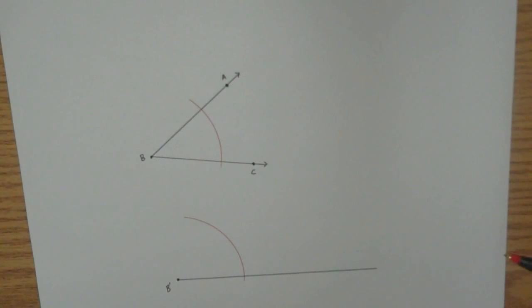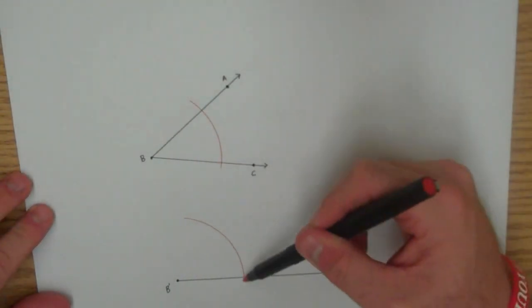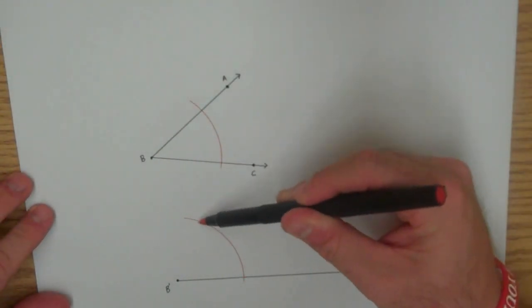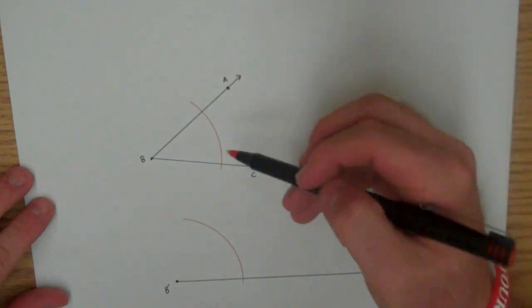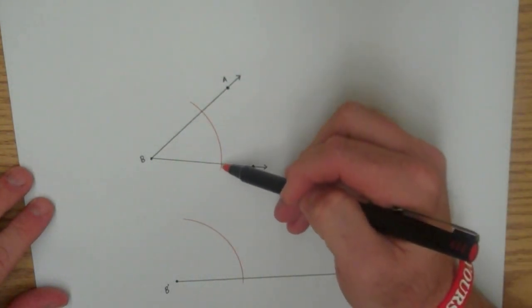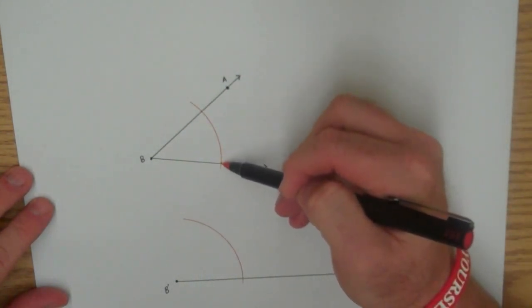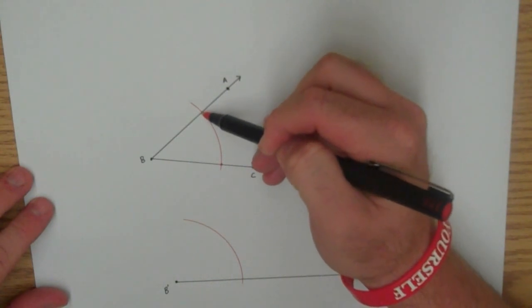Now what I want to do is I need to know how far along this arc do I need to put a point of intersection to draw the other side of my ray. Well, what I'm going to do is I'm actually going to measure the distance from here to here.